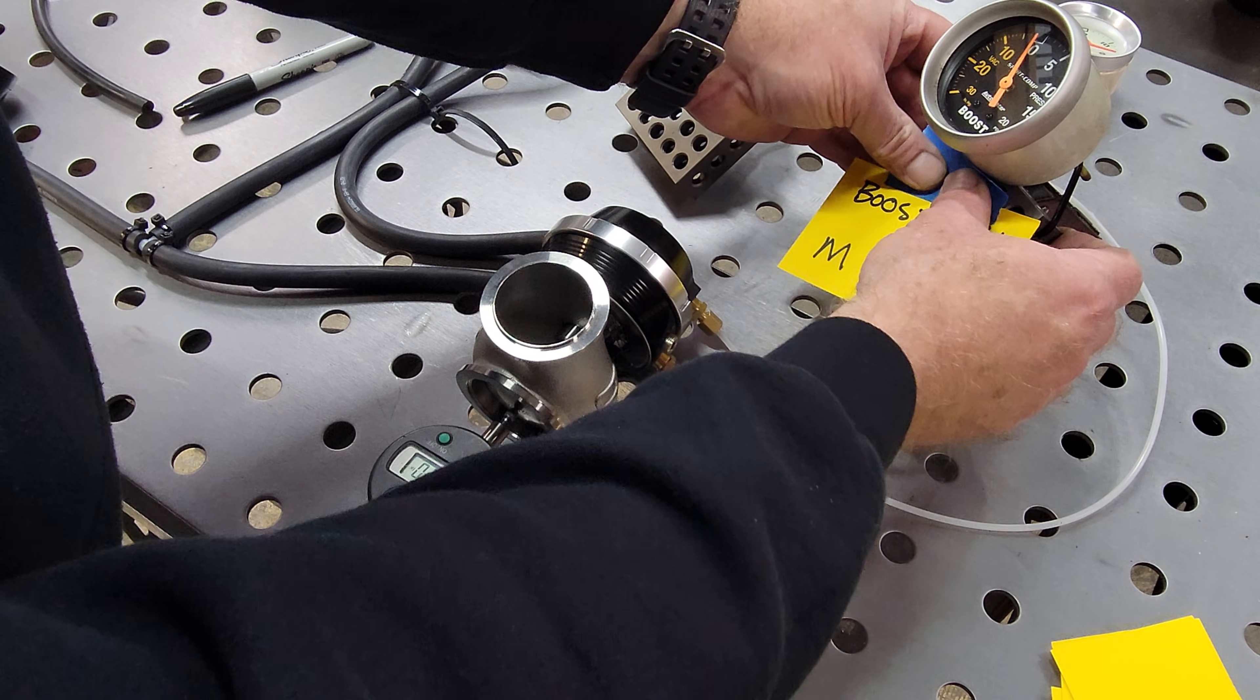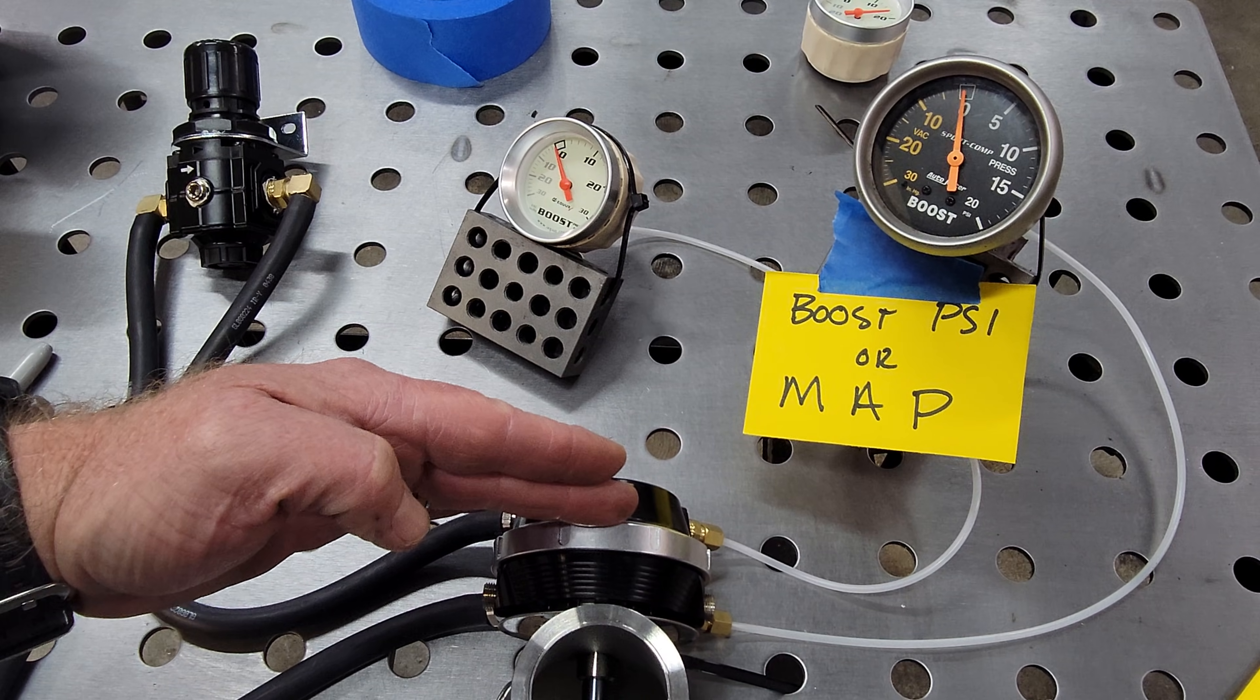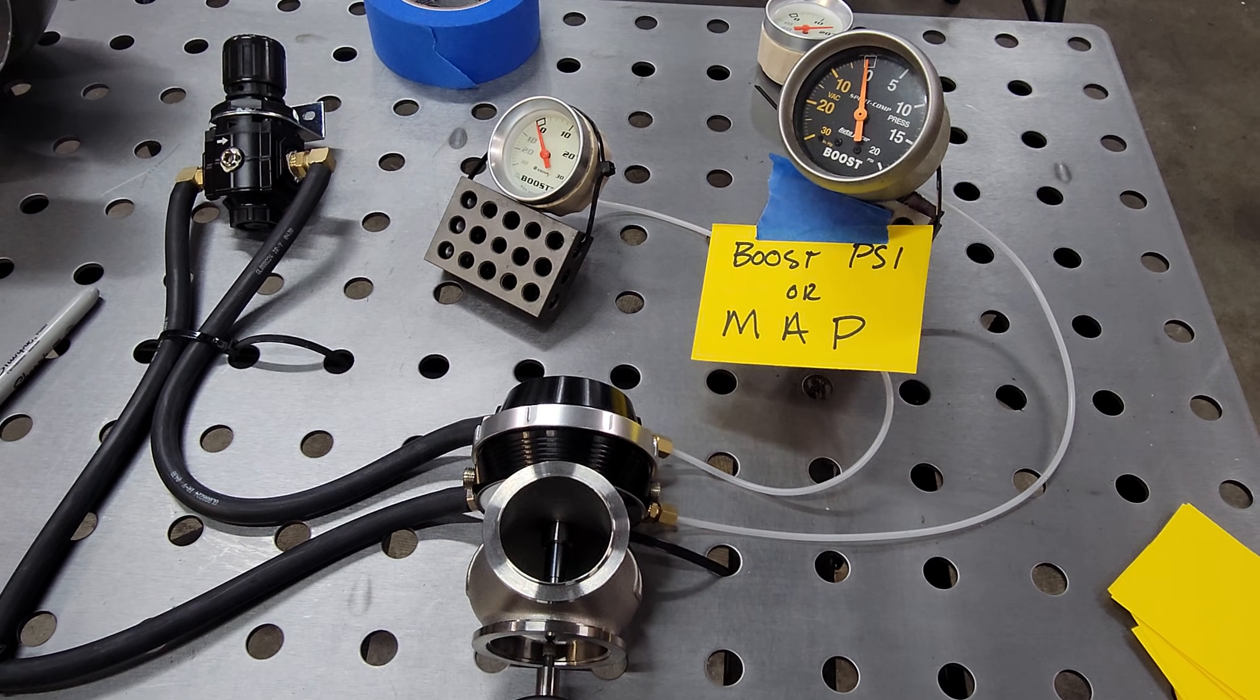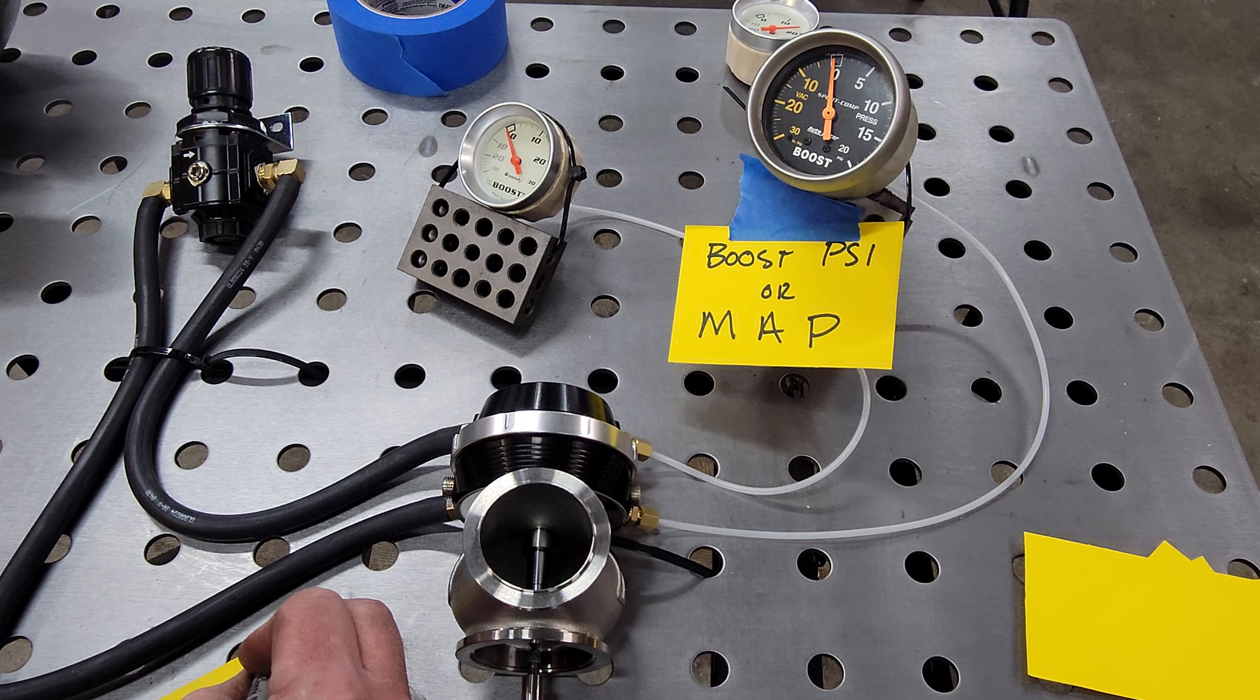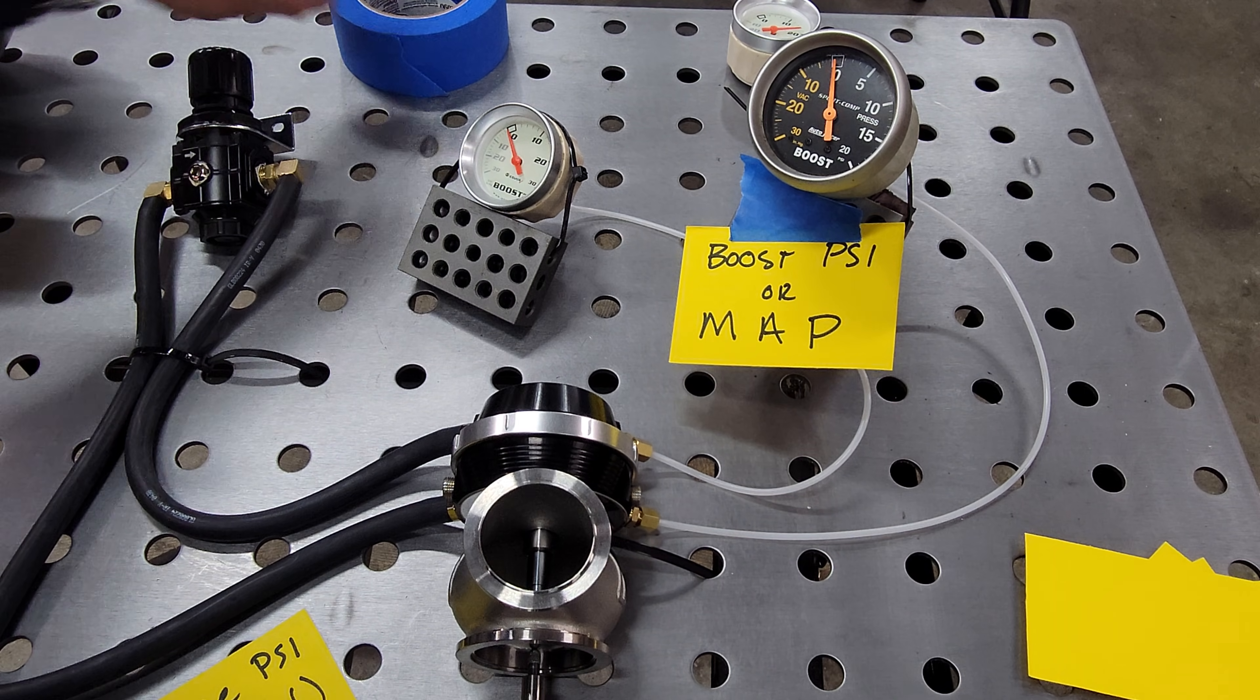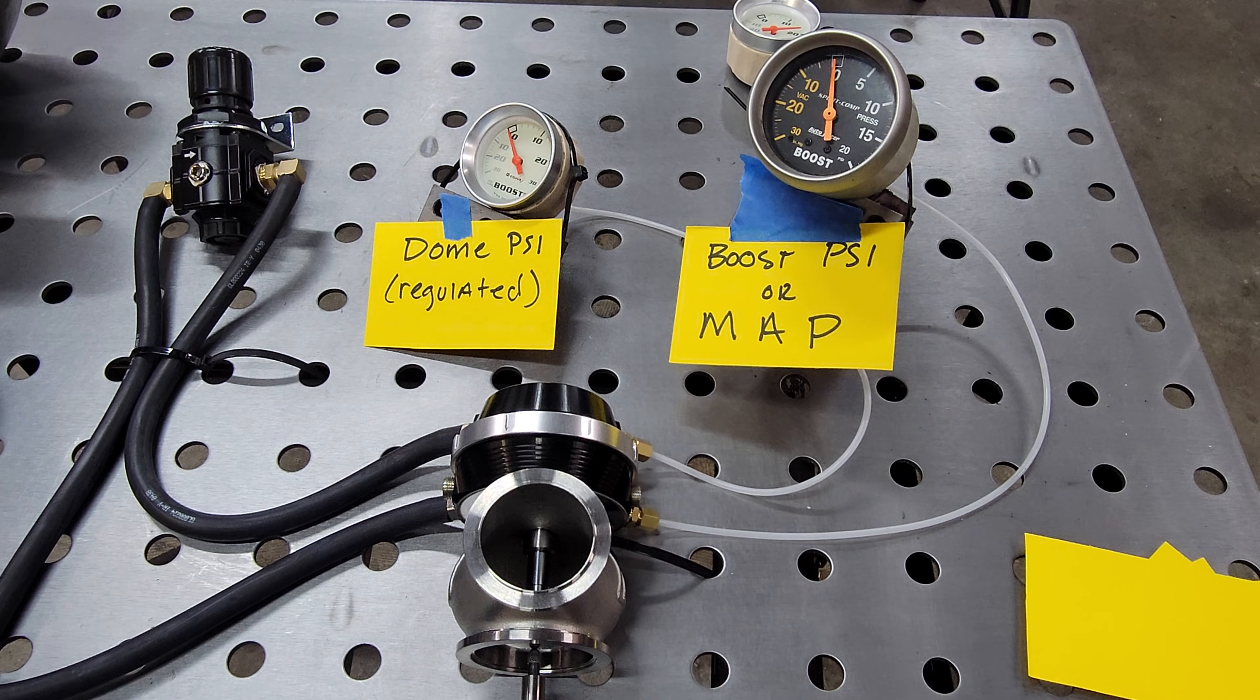We'll do some high-tech graphics right here. Alright. The second smaller gauge is also hooked up to the wastegate as well. It is going to the dome, or the top side of the diaphragm. So, this is going to represent our regulated amount of air that is going to be applied to the top of the wastegate actuator. Most of the guys in the race car world will call this dome pressure. We will also put regulated if that makes more sense because it's coming from the regulator.